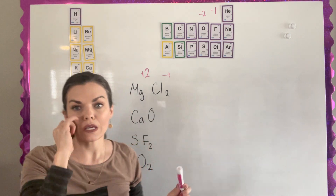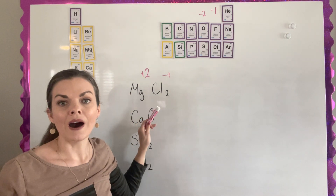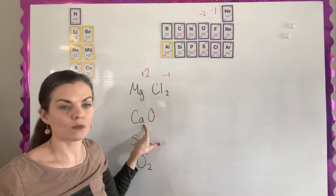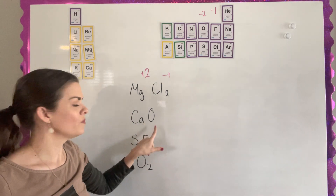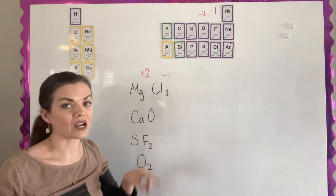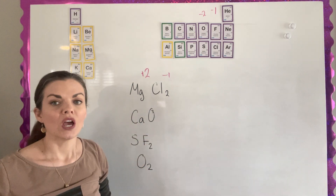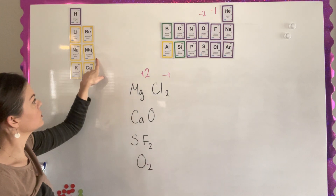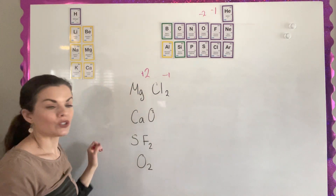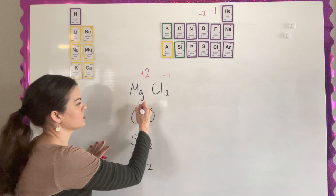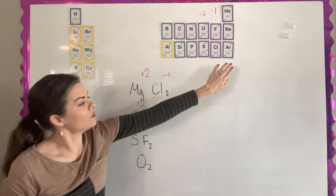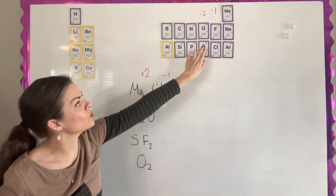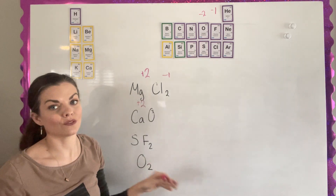For calcium oxide, it is ionic because I have a metal and a non-metal, so the oxidation state is just going to be the charges. For calcium, it's group 2A so it's a plus 2, and for oxygen it's group 6 so it's a negative 2.